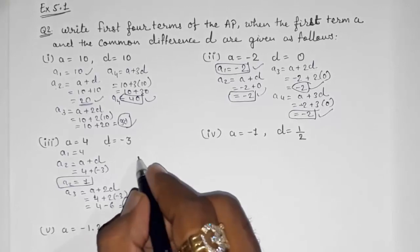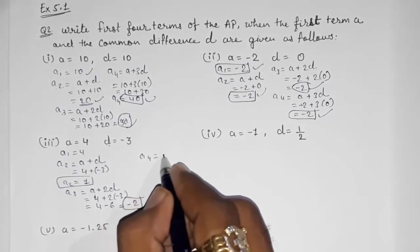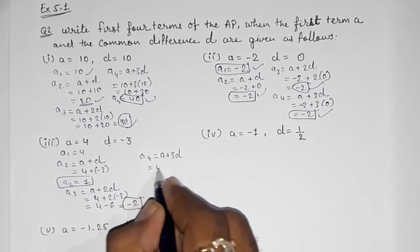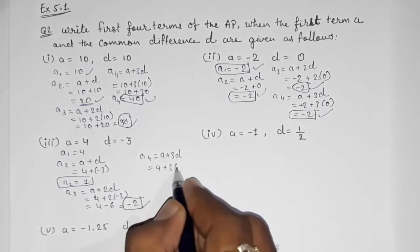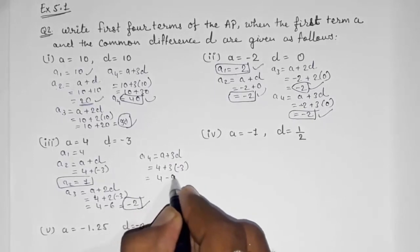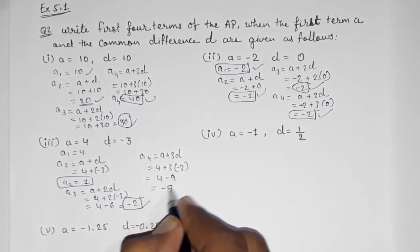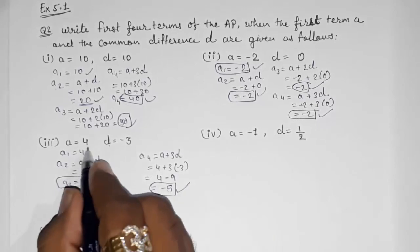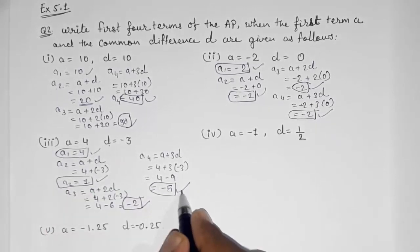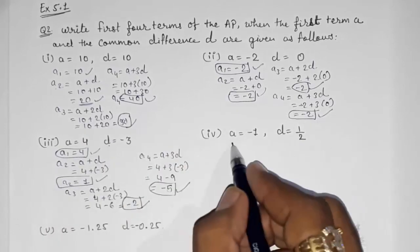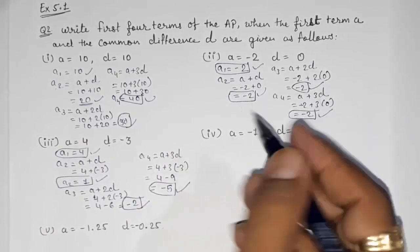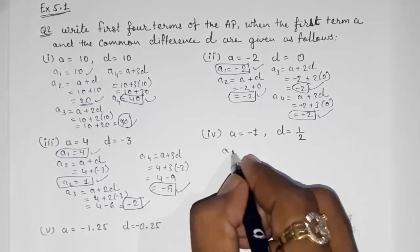The fourth term a4 = a + 3d. Now for the next part, the difference is a fraction, so don't worry — we use the same formula. a1 = -1.